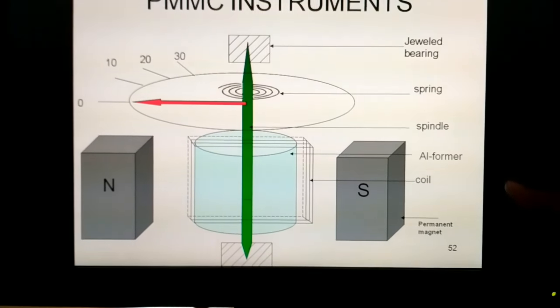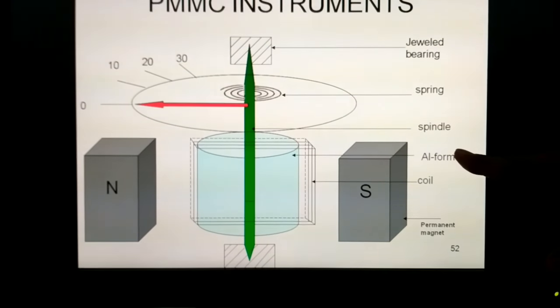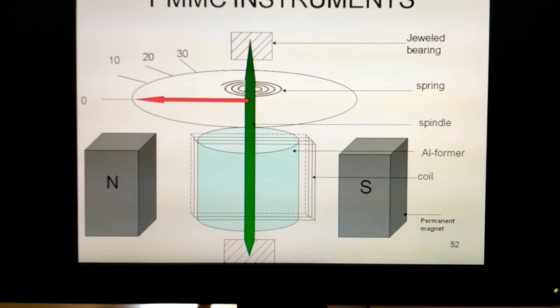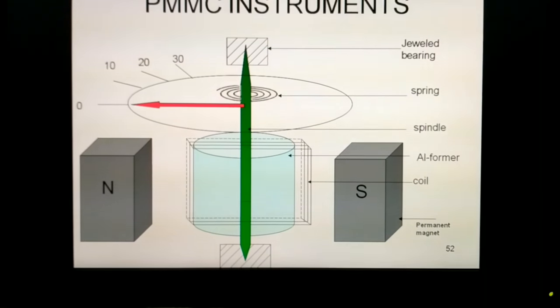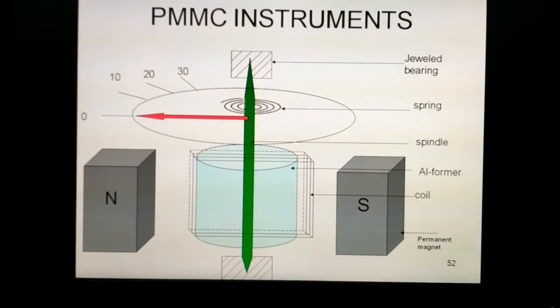This coil is on the aluminum former as you are seeing. So this coil is carrying the current, and with the help of this current, the force is exerted on the coil and the pointer is deflected.